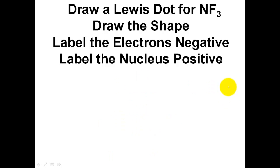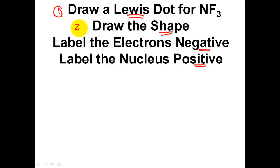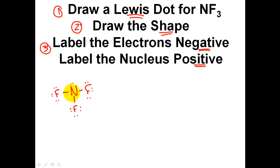On this slide, I want you to ultimately tell me whether this molecule is polar or nonpolar. In order to do so, we're first going to draw the Lewis dot structure, then draw the shape, then label the electrons on the shape as negative and the nucleus as positive, and from that we should be able to determine whether we have a polar or nonpolar molecule. My Lewis dot structure for nitrogen trifluoride will appear like this — I've included all the extra electrons because they're going to be pretty important in step three.